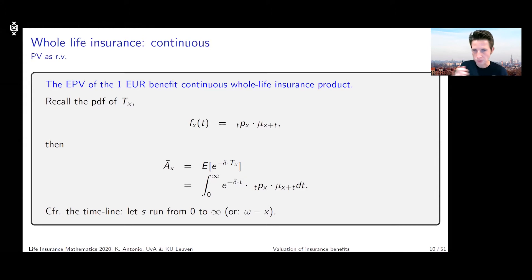That's in any case where the omega minus x is coming from. Omega is the upper limit for the age, and then omega minus x is the upper limit for the remaining future lifetime of the x-year-old.